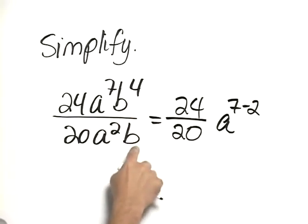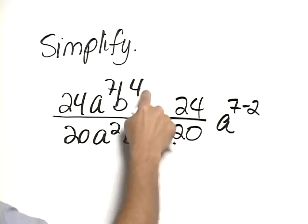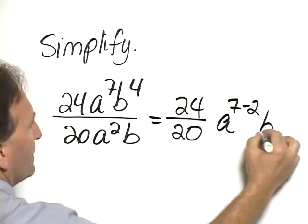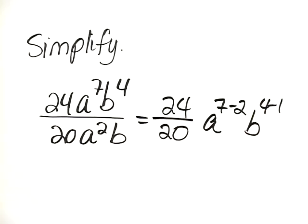For the b, since it's the same base, we again subtract the exponents. We understand there's a 1 there, so it would be b to the 4 minus 1.